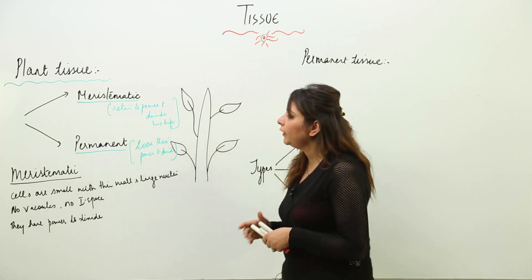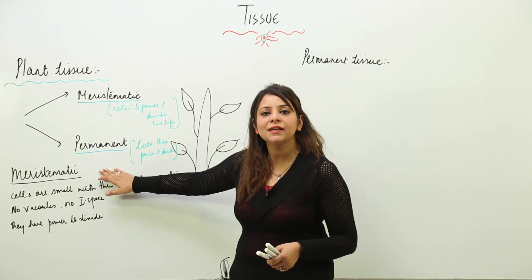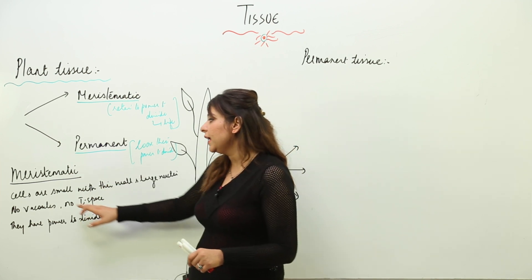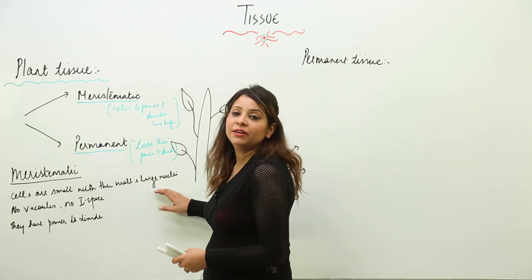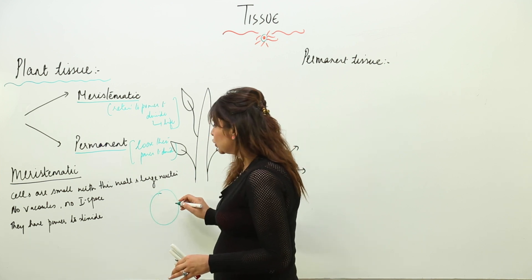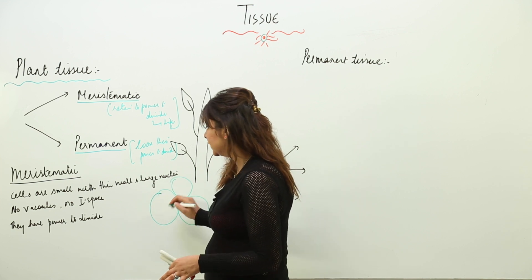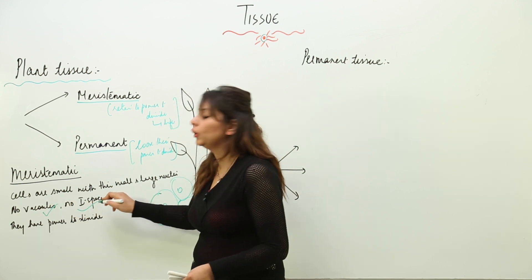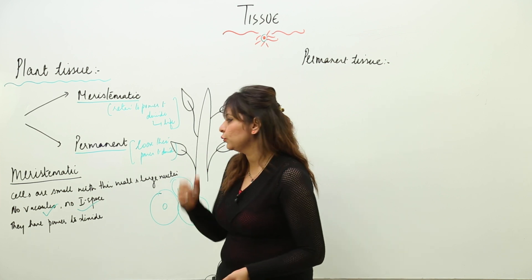Moving on to meristematic tissue in detail — meristematic cells have the power to divide throughout life. They are actually very small, thin-walled, and have a large nucleus. They can be of any shape. The cells have no vacuoles, or very little space between them.